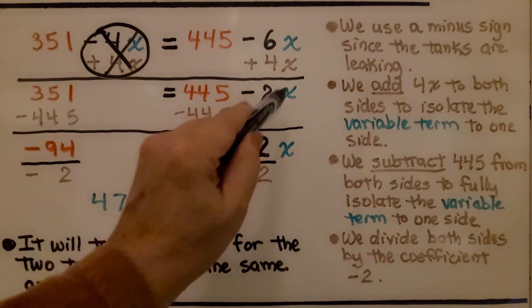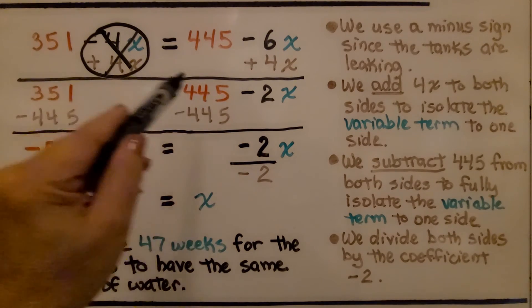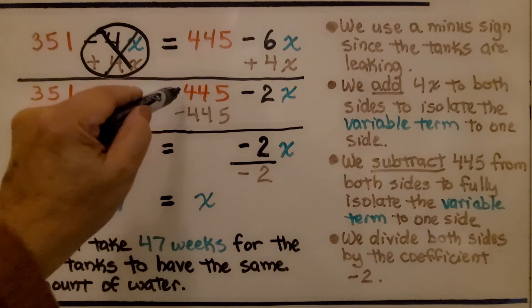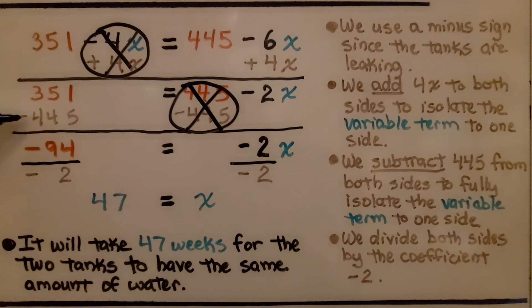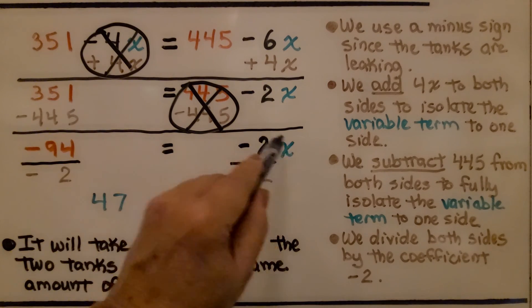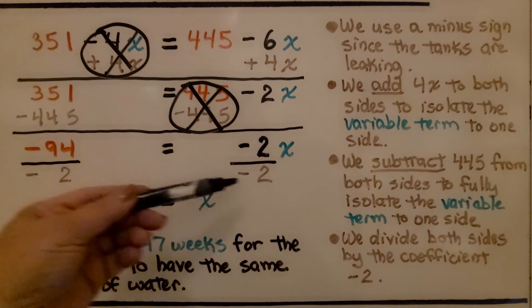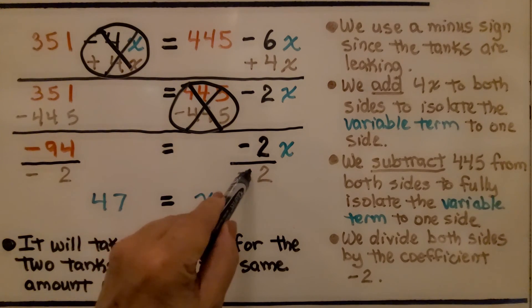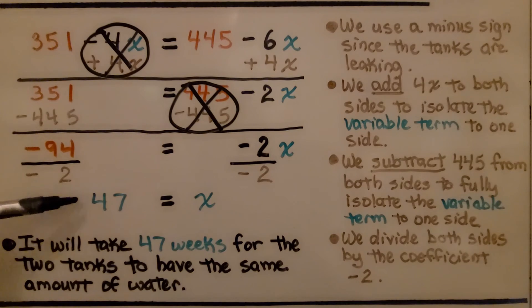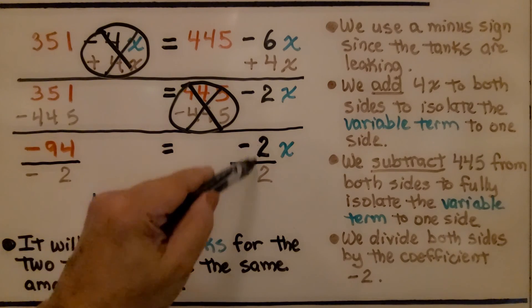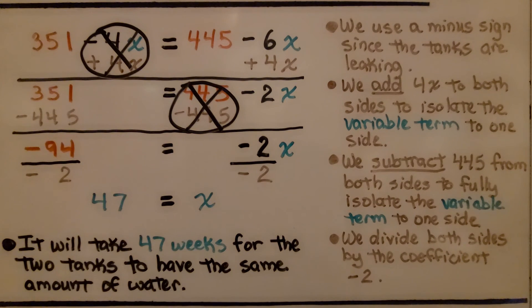We need to get this variable term to one side, so we subtract 445 from both sides to fully isolate the variable term. We have a plus 445 and a minus 445 that makes a zero pair and eliminates it. On the other side we add positive 351 but take away 445, putting us into the negatives with negative 94. We drop down the negative 2x. Since negative 2x is multiplication — negative 2 times some number x — we use division as our inverse operation, dividing both sides by the coefficient negative 2. When we divide negative 94 by negative 2, we get positive 47, because when you divide and the signs are the same, it makes a positive. On the other side we get positive 1x, so x is equal to 47.